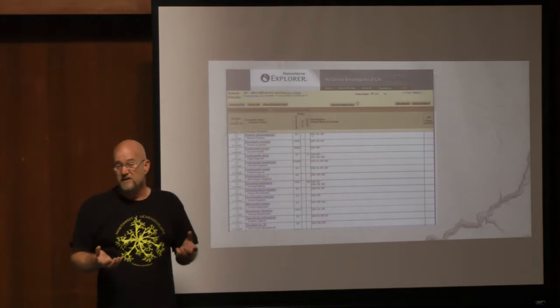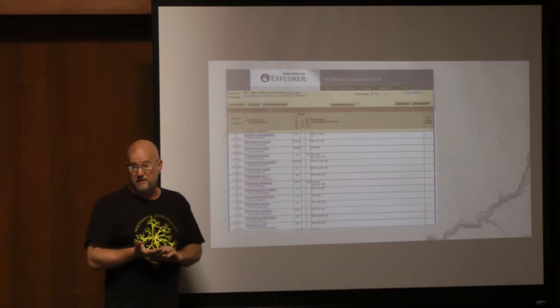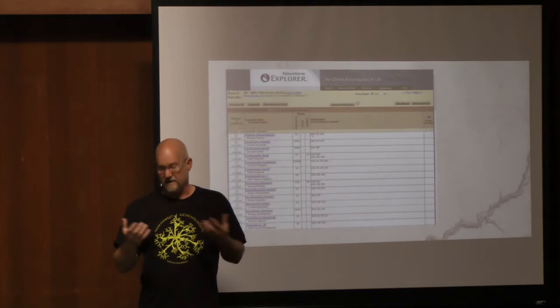We also have rare caddisflies and mayflies. Those are probably the big three things that are rare in our area. So how do we actually get data on these things?